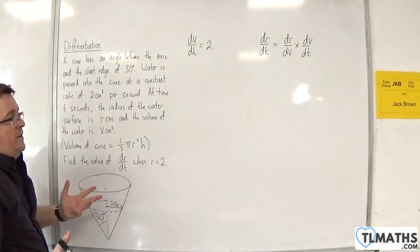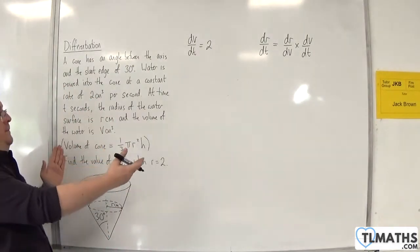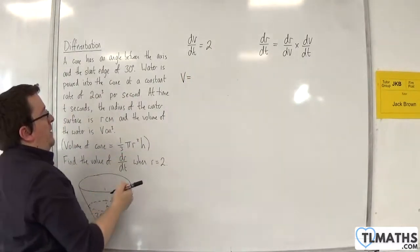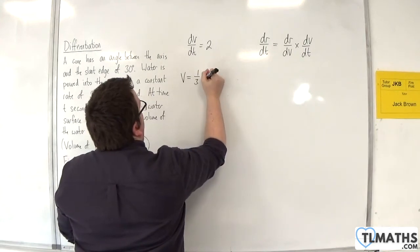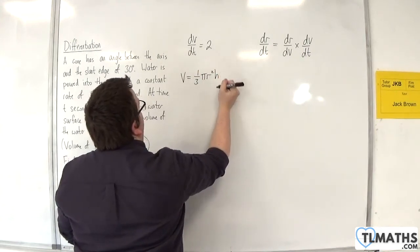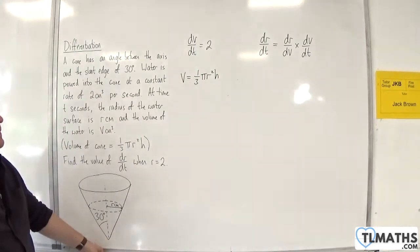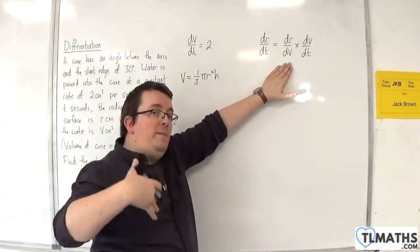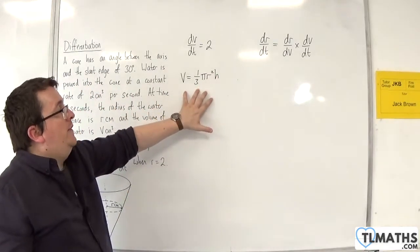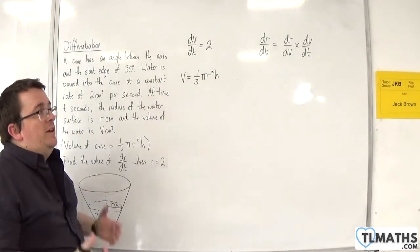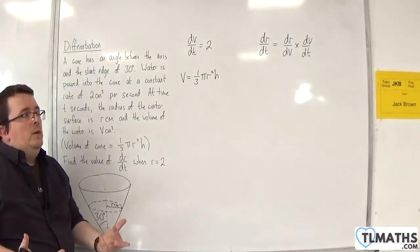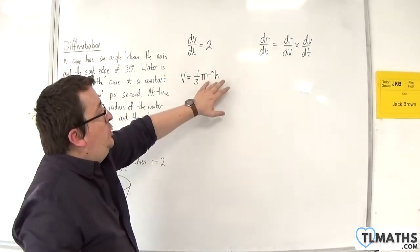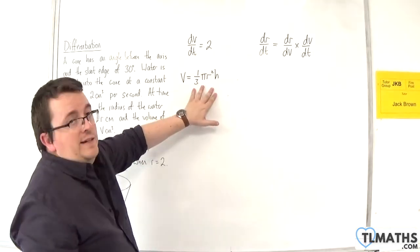The only other bit of information I'm given is the volume of the cone formula. So v is equal to one third pi r squared h. But in order to get to dr by dv, I'm going to need dv by dr. I need to differentiate this, but the problem is I don't know what h is. I want to write h in terms of r so I can differentiate it.